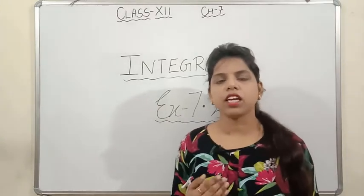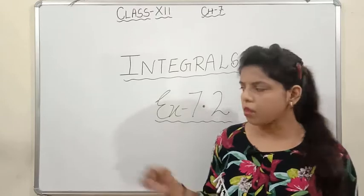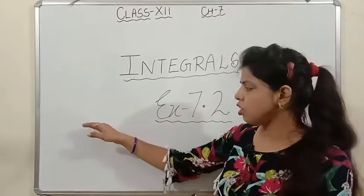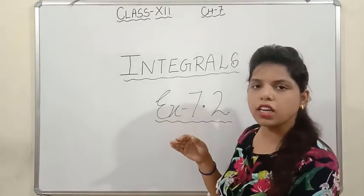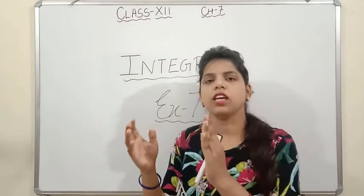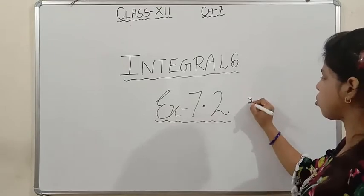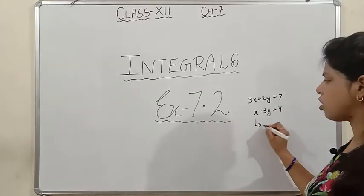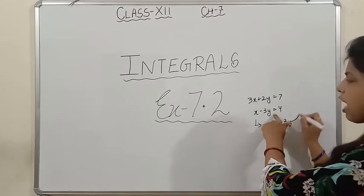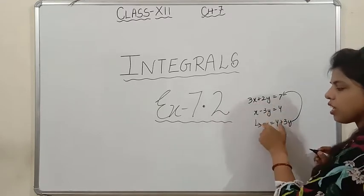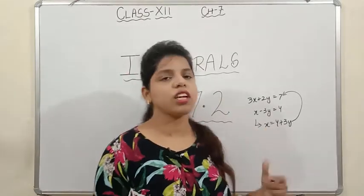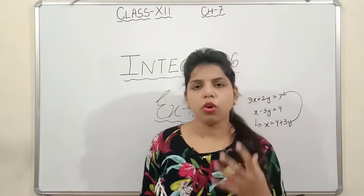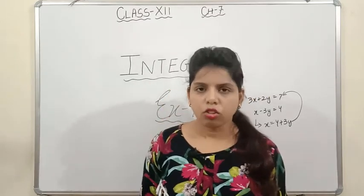You have studied substitution method in 10th class in the chapter linear equations in two variables. There, you take the value of x or y from one equation and substitute it into the second equation. For example, if 3x + 2y = 7 and x − 3y = 4, you find x from one equation and put it in the other. Similarly here, to simplify integration, we substitute with a new variable.